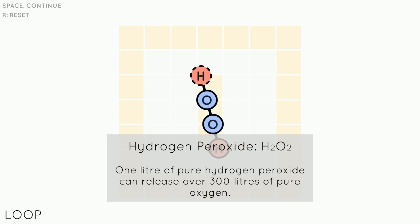Hydrogen peroxide H2O2, one liter of pure hydrogen peroxide can release over 300 liters of pure oxygen.